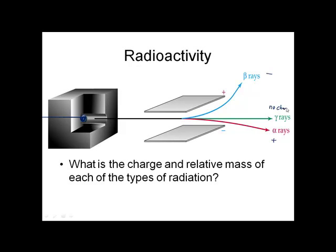Now, what can we figure about the relative masses of the types of radiation? Well, if we think about the beta particle and the alpha particle, those got pulled, but it looks like they did not get pulled to the same degree.